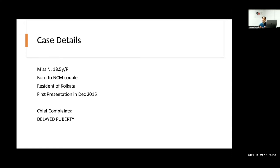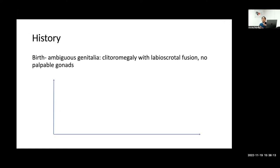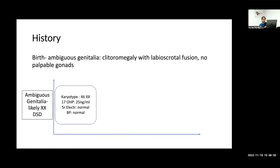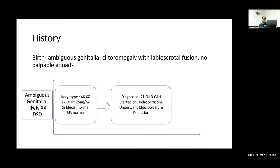Miss N presented at 13.5 years of age, born to a non-consanguineously married couple from Kolkata, first seen in December 2016 with delayed puberty — no breast development, no menarche, but having had pubarche. Importantly, the mother reported that at birth the child was born with ambiguous genitalia in the form of clitoromegaly with labioscrotal fusion and no palpable gonads. A diagnosis of XX DSD was made.